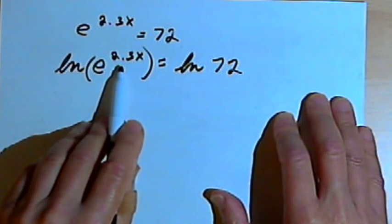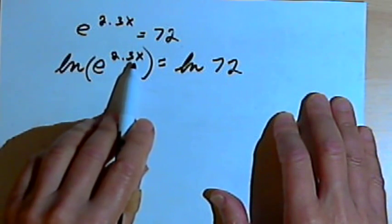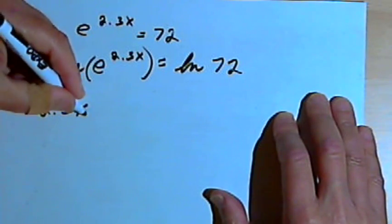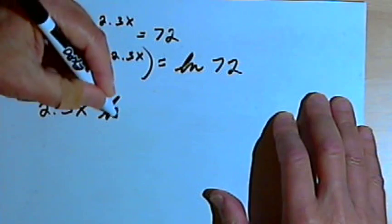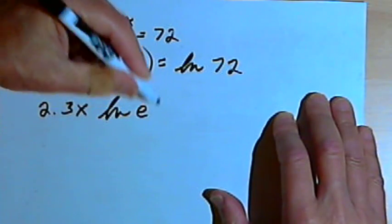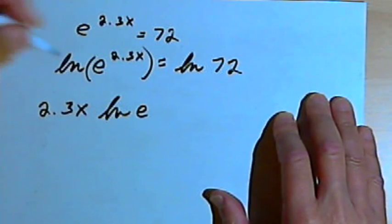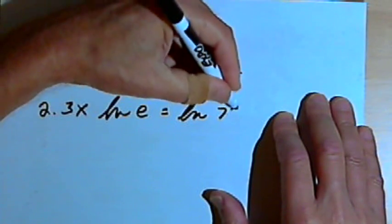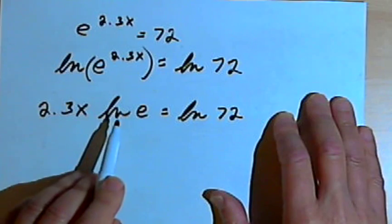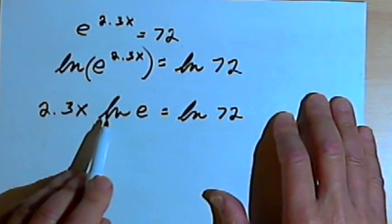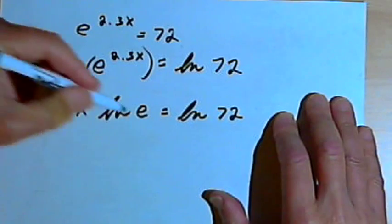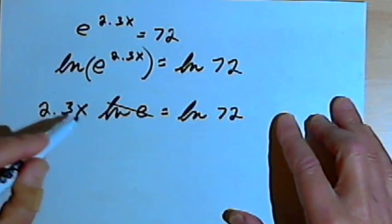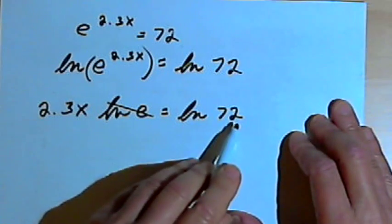I'm going to take the exponent, 2.3x, and make that a coefficient. So I'll have 2.3x times ln of e, and that's going to equal ln of 72. Now remember, when you have the natural log of e, that equals 1. So I can take this ln of e and just cross it out — it's just a 1. Now I've got 2.3x equals the natural log of 72.